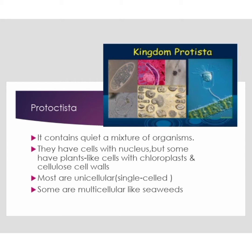Protista organisms have cells with a nucleus. Some have plant-like cells with chloroplast and cellulose cell walls, while some animal-like members don't have chloroplast or cellulose cell walls. But some do have chloroplast — that green pigment responsible for making food in plants — or cellulose cell walls.